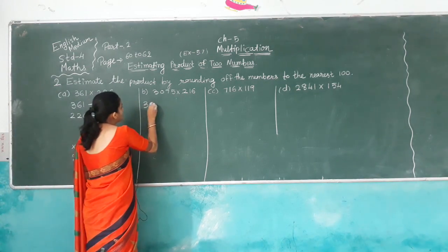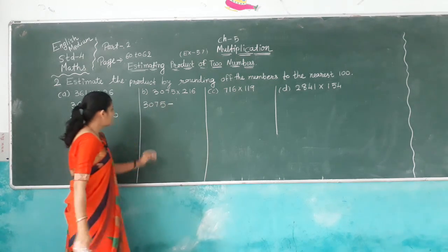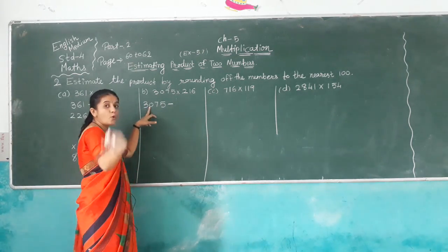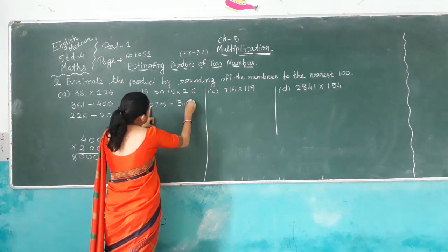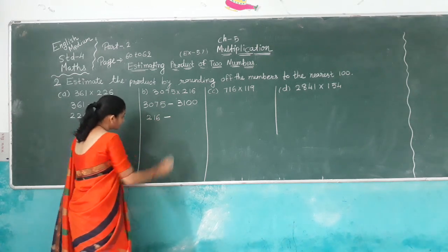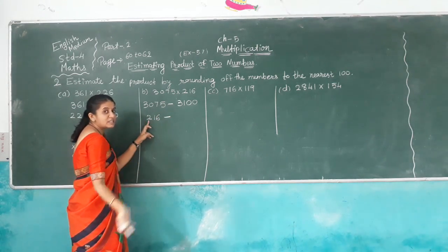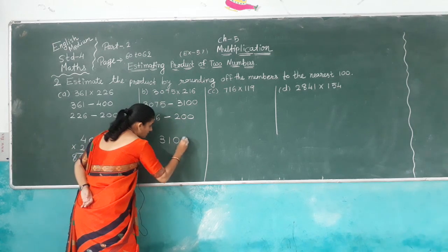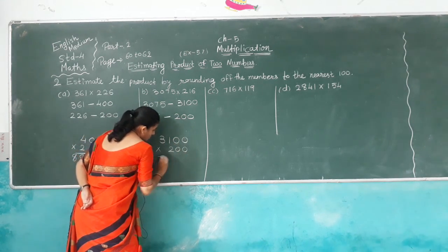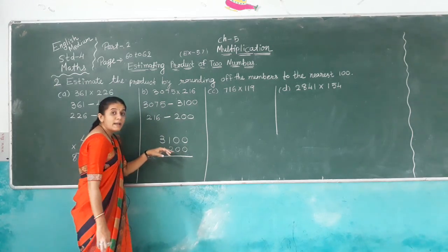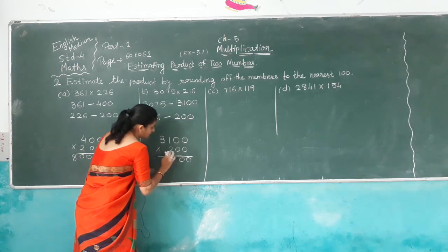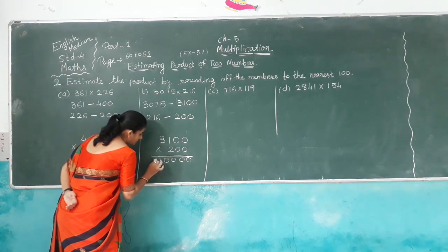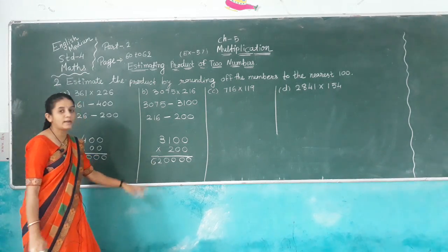Another one: 3,075 rounded to nearest 100. Here hundreds digit is 0, tens digit is 7, which is more than 5, so add 1: nearest 100 is 3,100. Then 216: tens digit is 1, less than 5, so nearest 100 is 200. Multiply 3,100 by 200 — keep 2 zeros. 2 times 0 is 0, 2 times 0 is 0, 2 times 1 is 2, 2 times 3 is 6. So answer is 620,000.